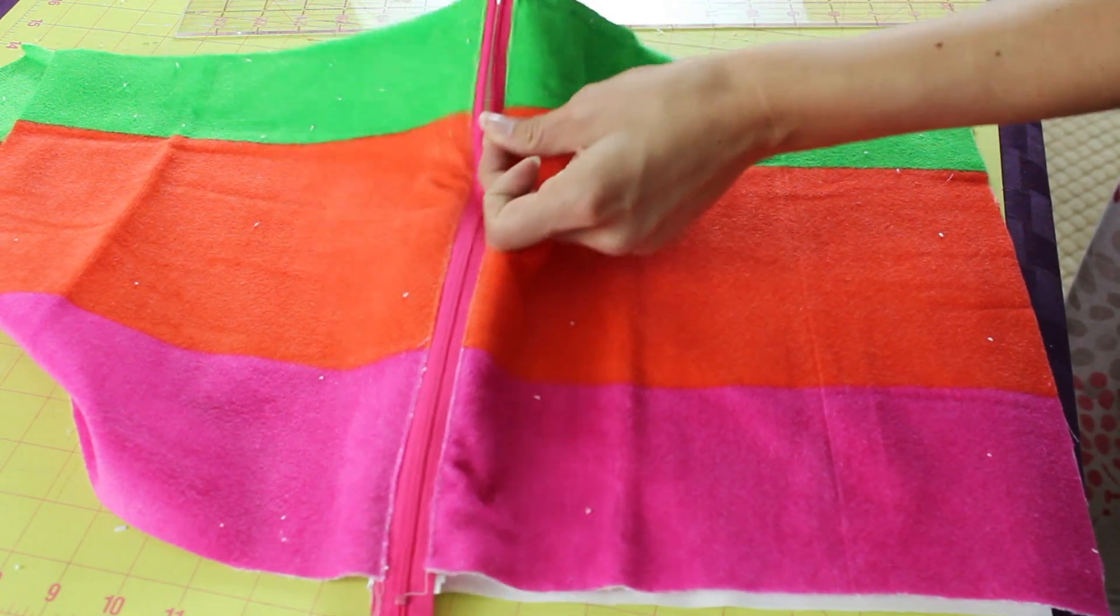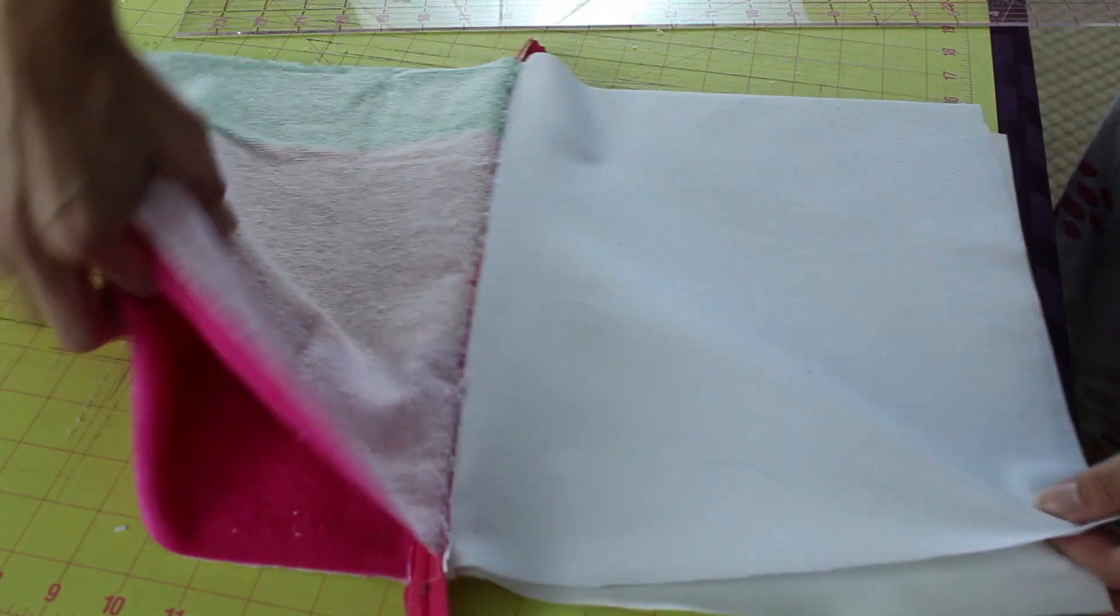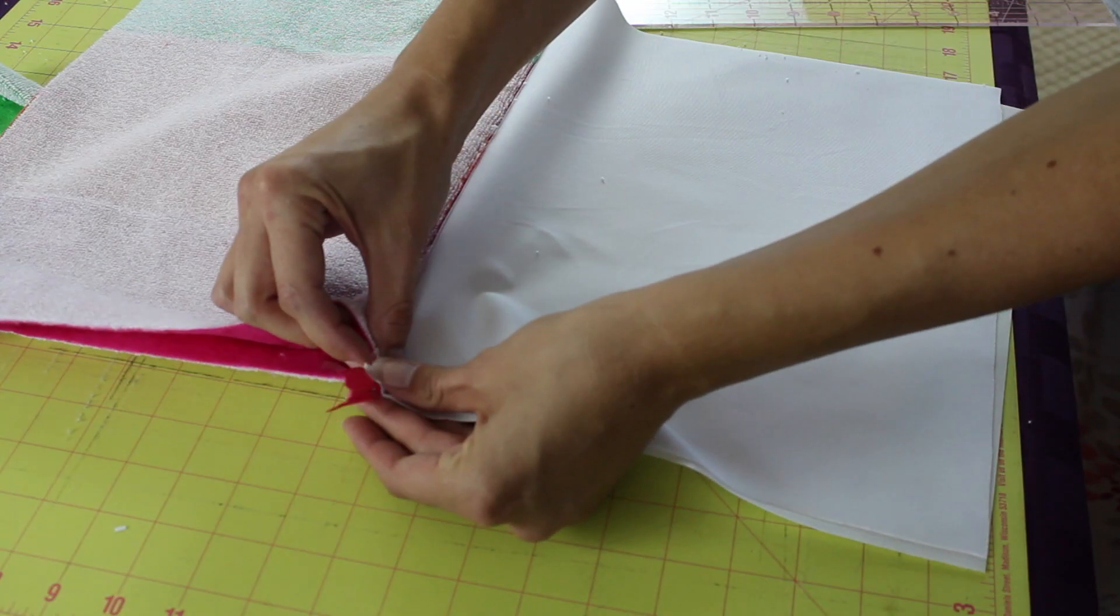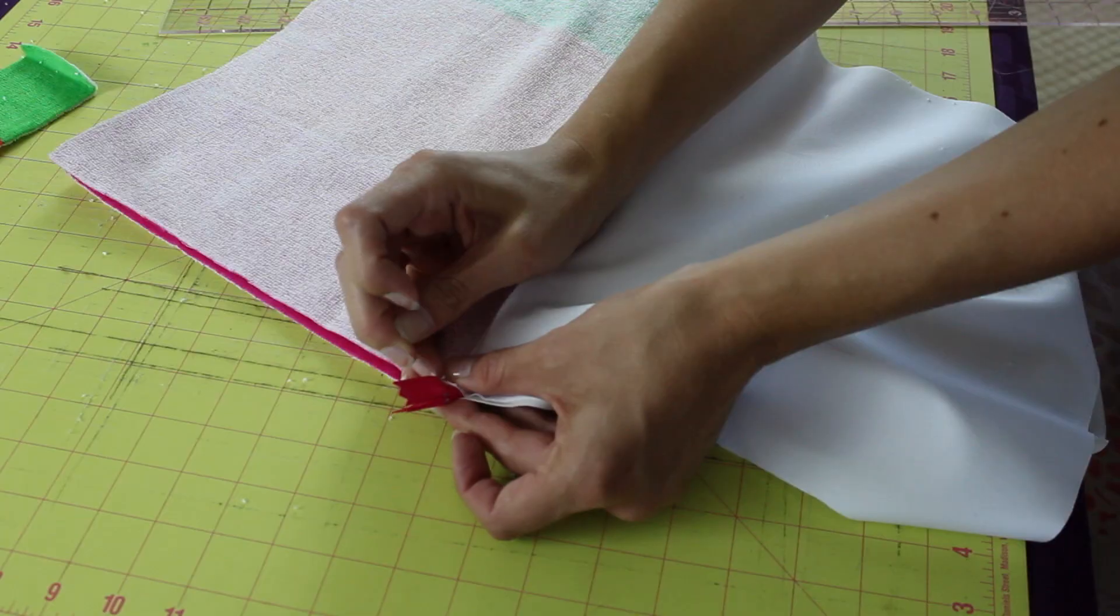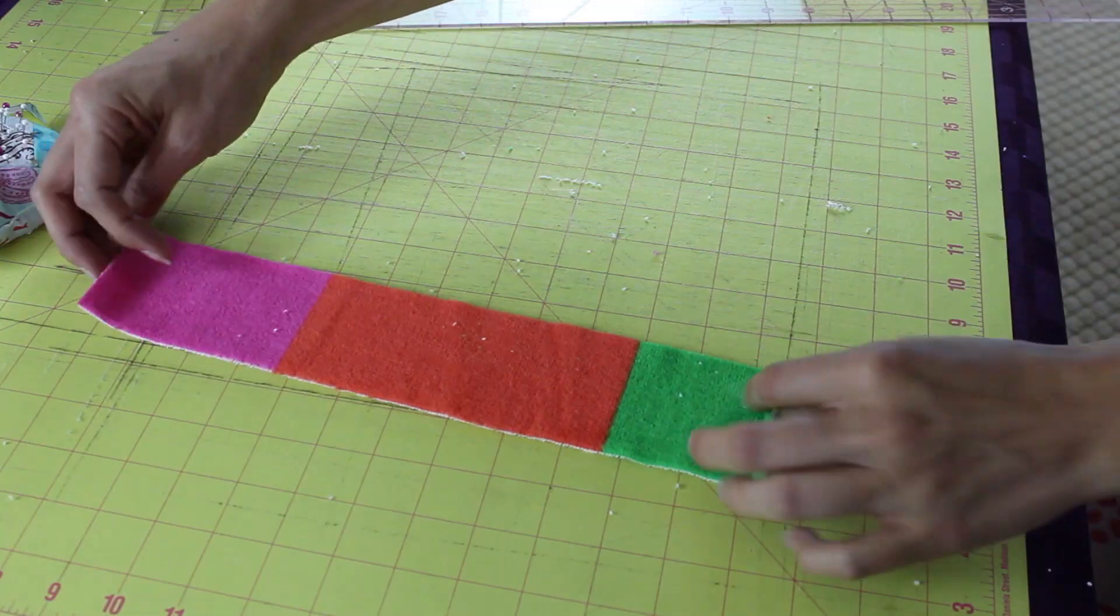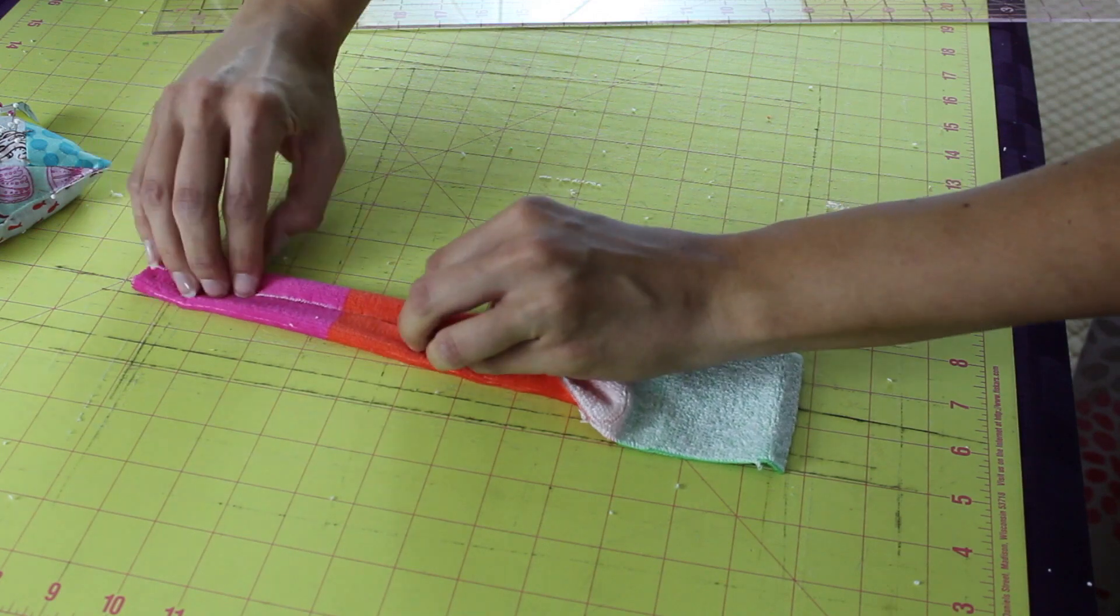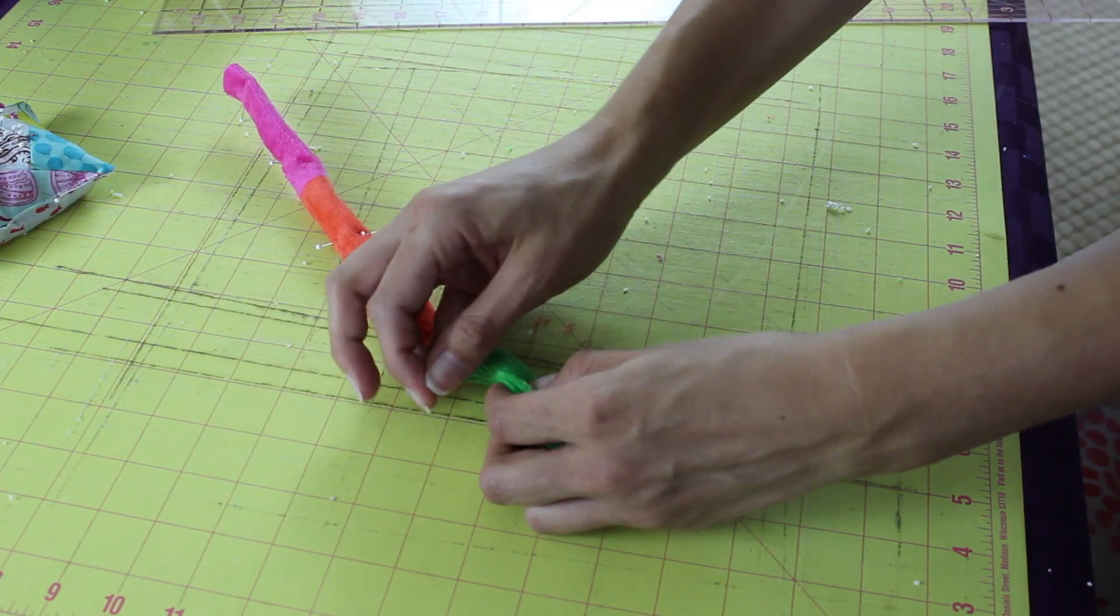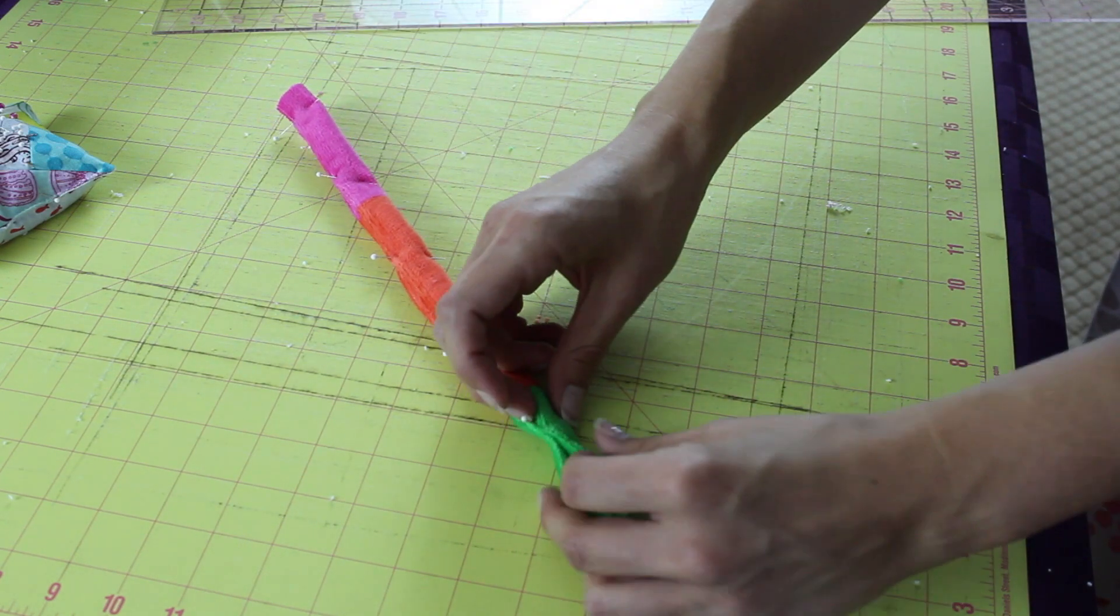You're going to need to open up the zipper about halfway, three quarters of the way. And then you're going to put the right sides of the terrycloth facing together. And then the right sides of the lining together. You want the teeth of the zipper facing the lining. And then pin that in place. The pins will work a little bit better than the clips for that step. Then you want to pin your handle. Fold the insides like so. Pin that in place.